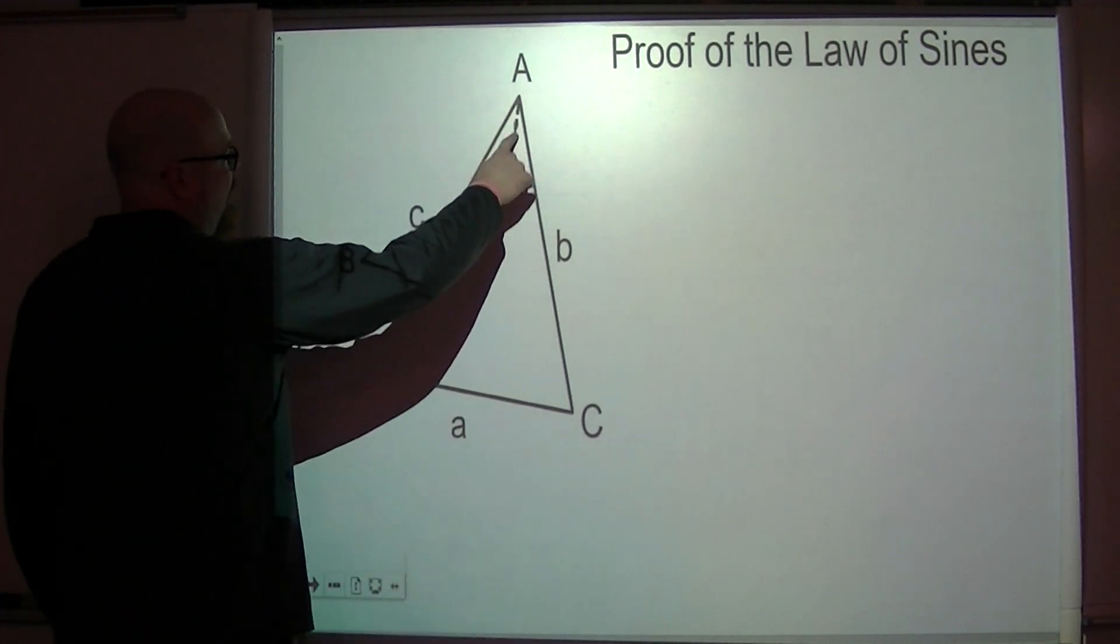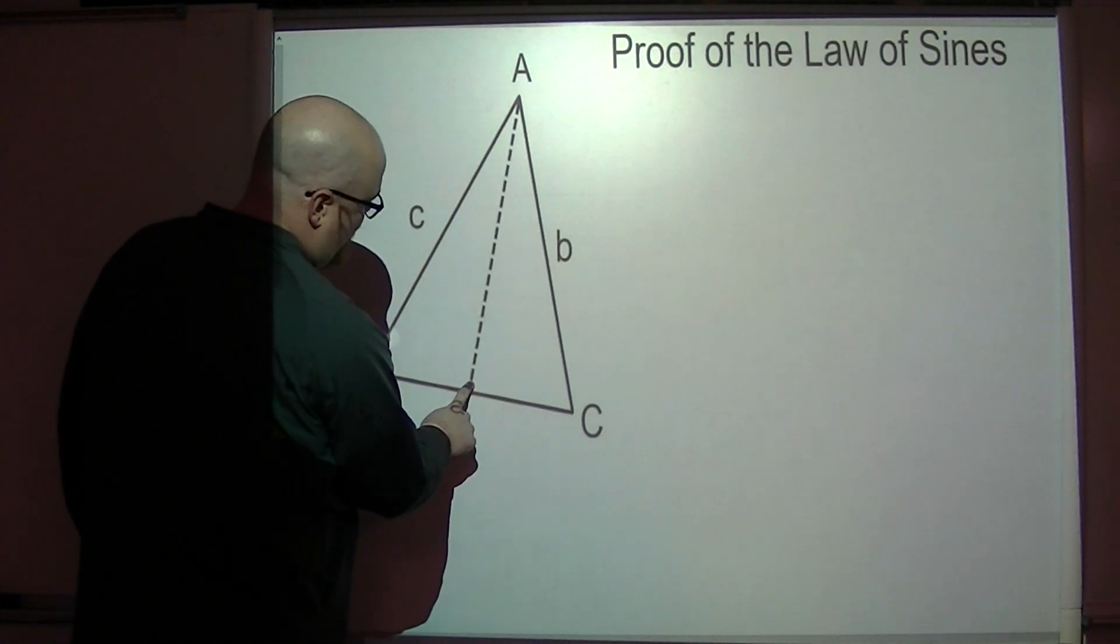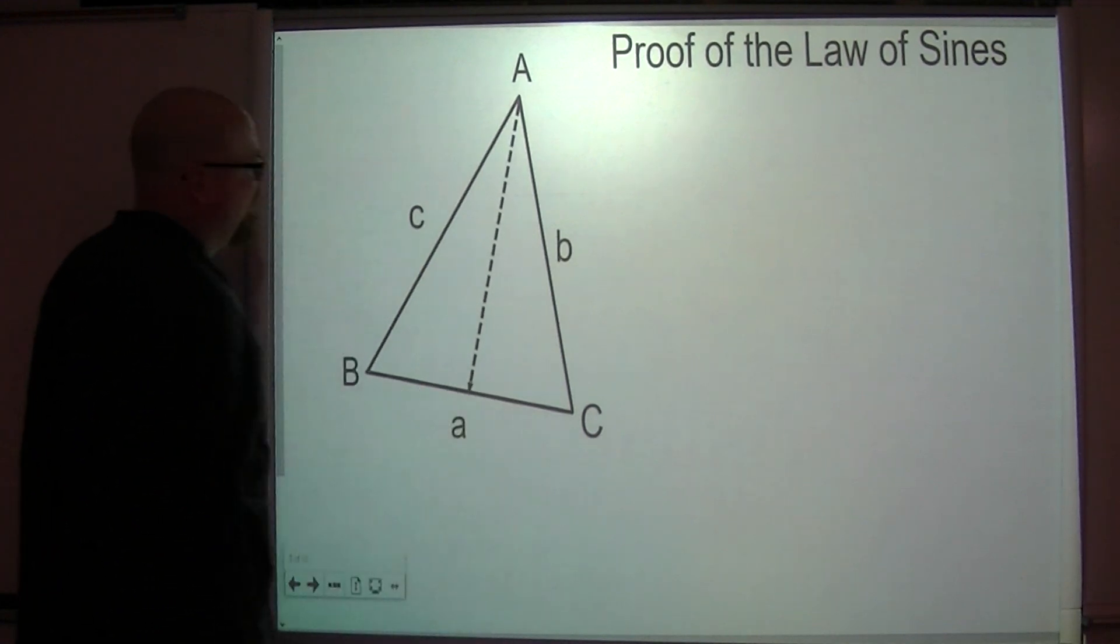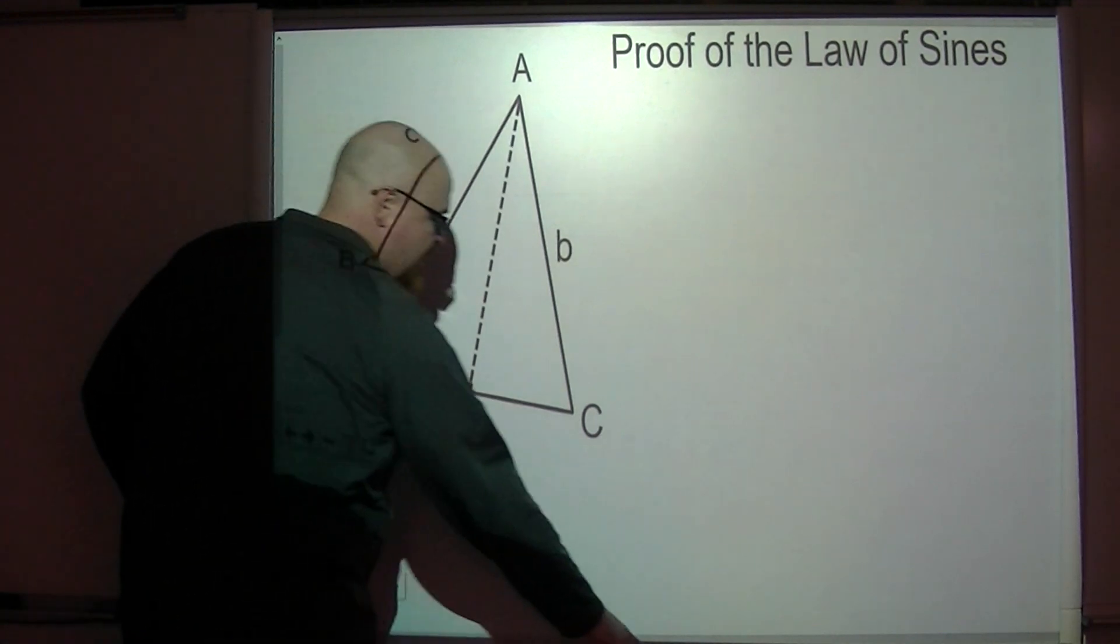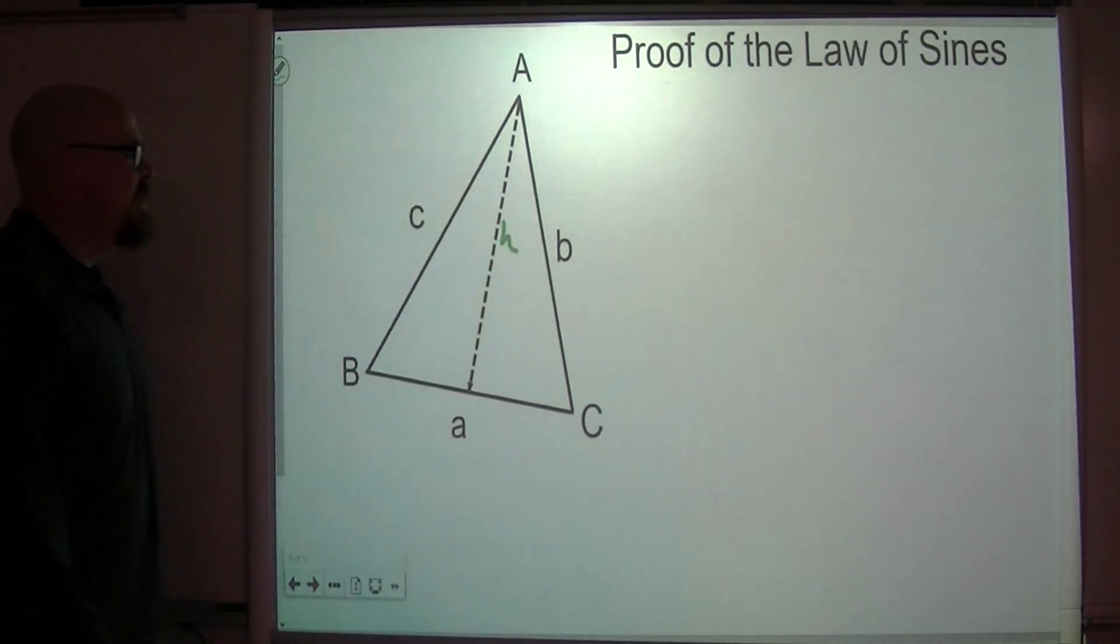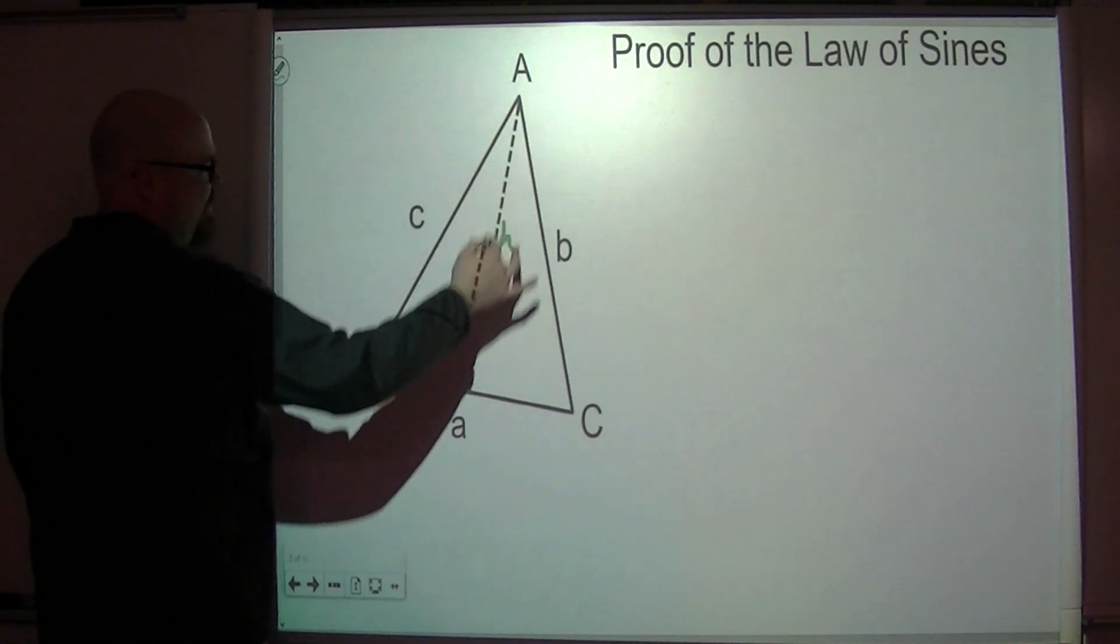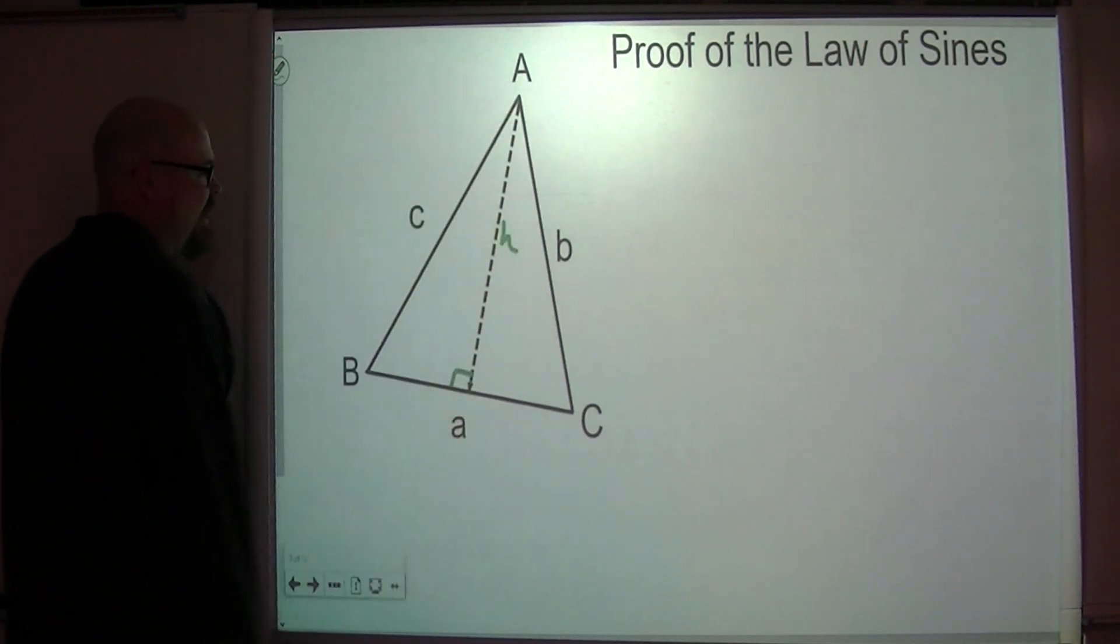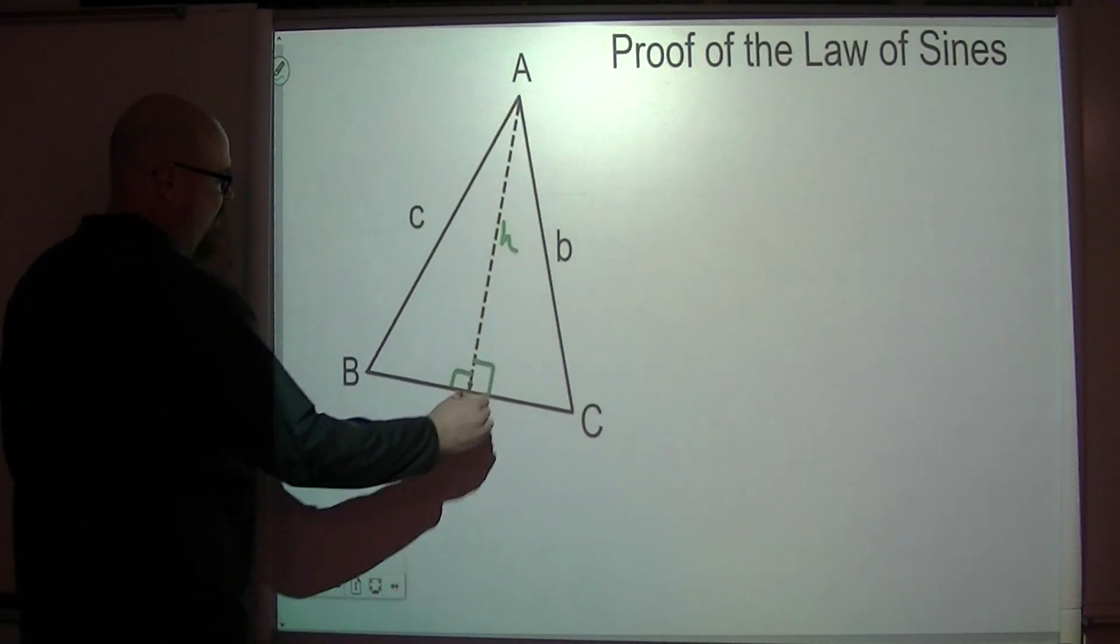We're going to drop a height segment. Let's see if I can hit this right. About right like that. We're going to call that H. So this is H right here. Now what that does, if I drop a height segment, a perpendicular to here, I've got two right triangles down here now.